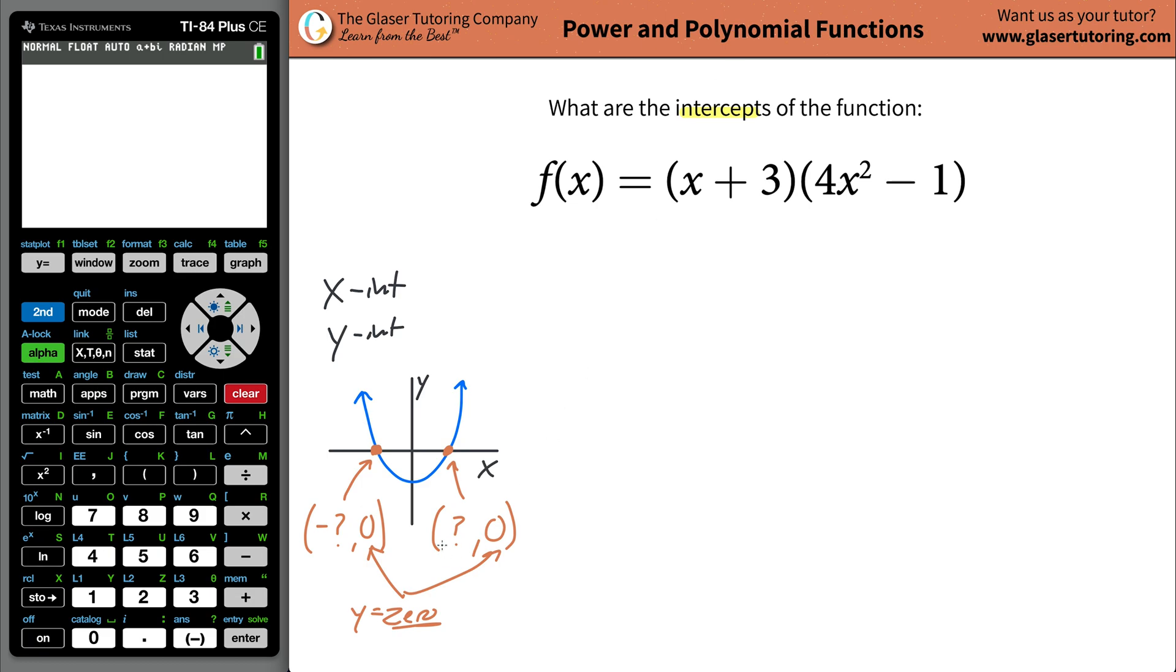Now, if we take a look at the y-intercept, there's only going to be one here. If you're dealing with a function, there should only be one y-intercept. That's it, period. Otherwise, it wouldn't be a function. It wouldn't pass the vertical line test. If that sounds unfamiliar, check out our functions playlist. We have hundreds of problems there.